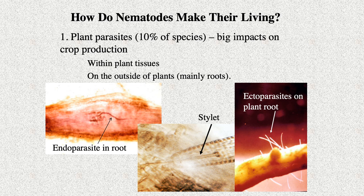What do nematodes feed on? One way is to feed on primary producers, such as plants. Here we see two types of plant-parasitic nematodes feeding on roots. Endoparasites feed within the roots of plants, whereas ectoparasites move around on the outside of roots, feeding on plant tissues using a stylet — seen in the middle photo — which is like a small needle that is inserted into the tissues to withdraw materials to feed on.